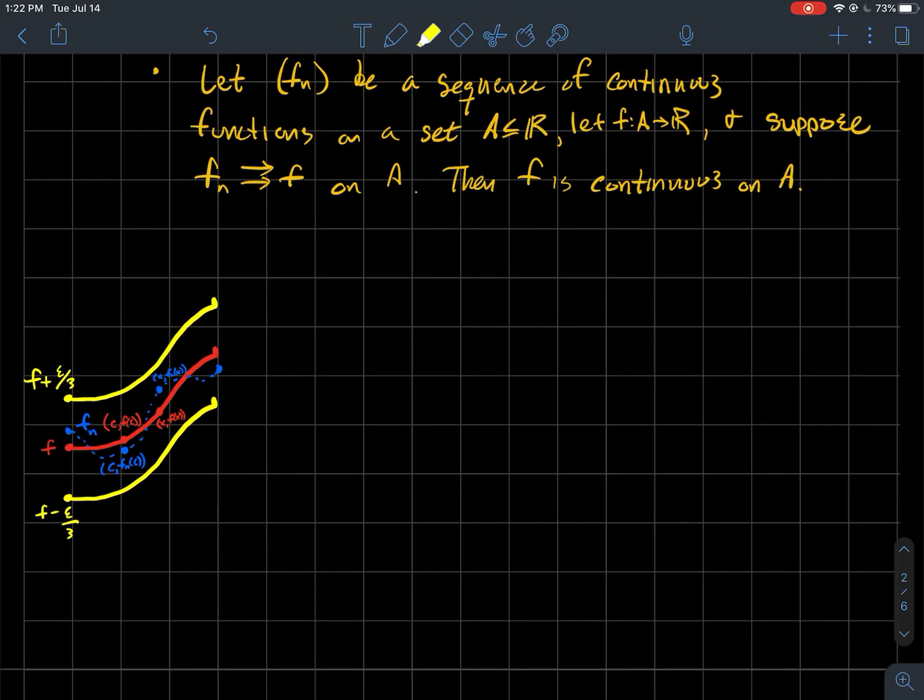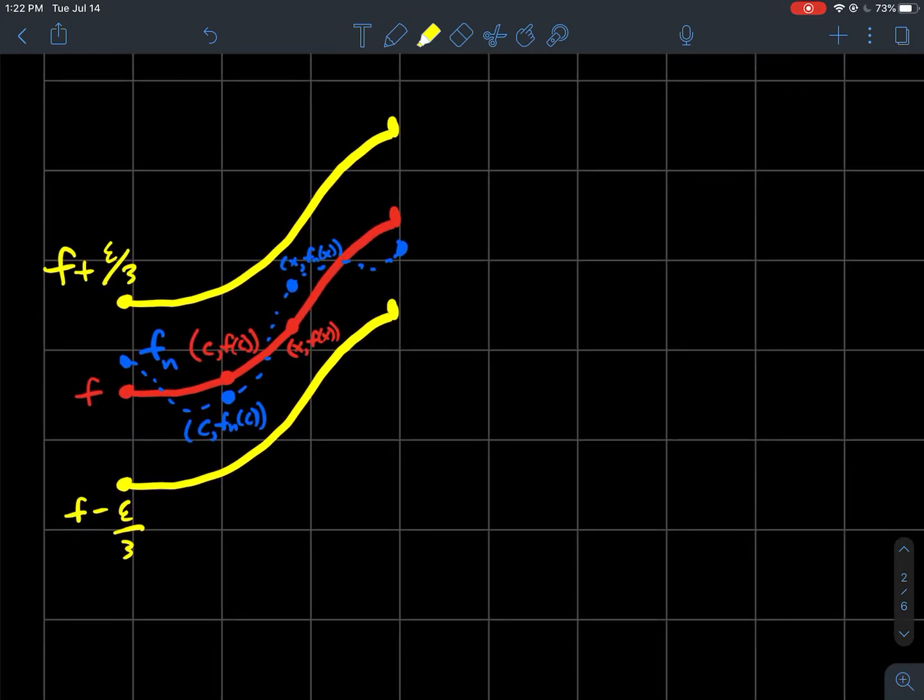So what's my picture here? I've taken my red graph f, and what I've done, ignore the blue for the moment, and just think about the red. What I'm going to do is I'm going to put some window around the red graph of length epsilon over 3.